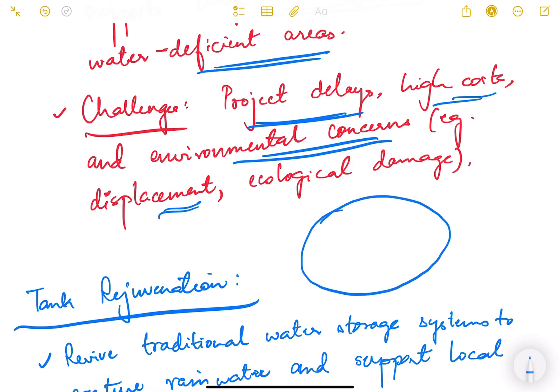Challenges: if you want to construct huge reservoirs and dams, there will be project delays, land acquisition problems, high costs, environmental concerns—especially displacement issues because entire villages can be submerged, so people have to be displaced. Ecological damage might happen because forest areas have to be cleared or might get submerged. Such projects take 40, 50, even 100 years to get executed.